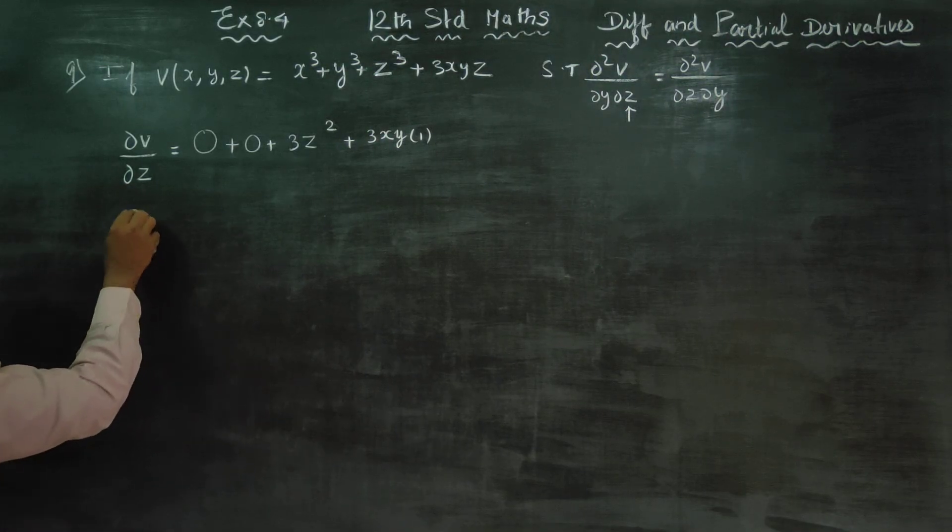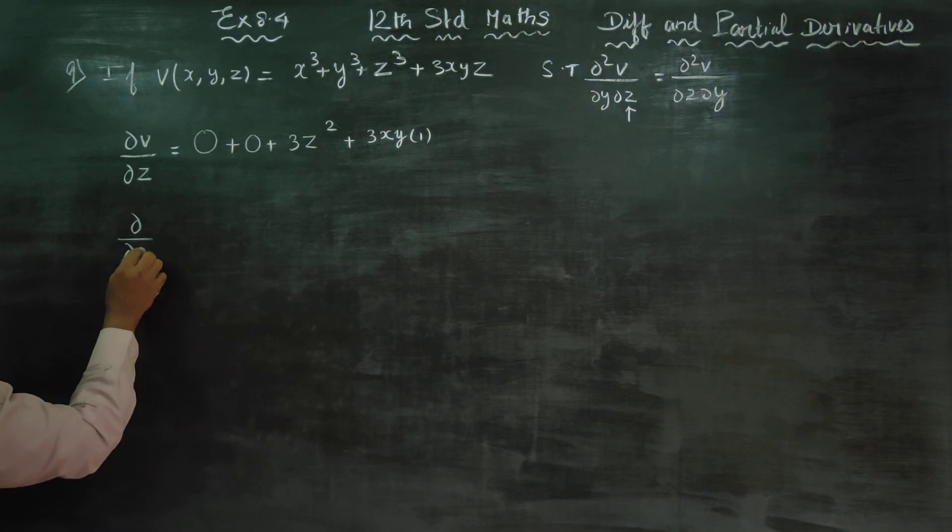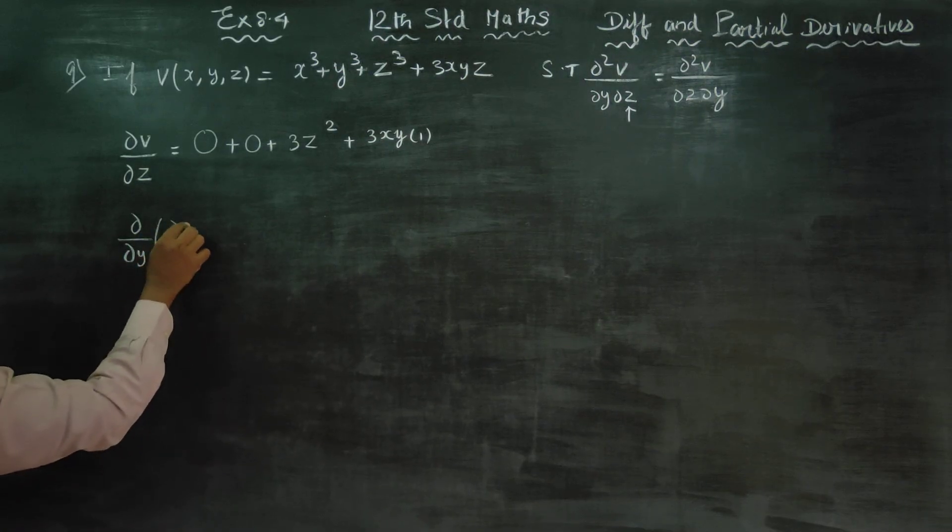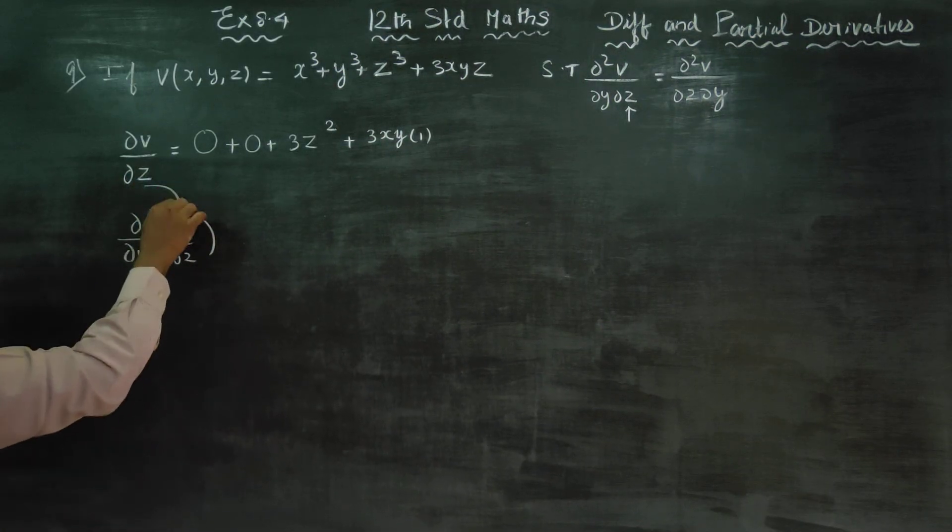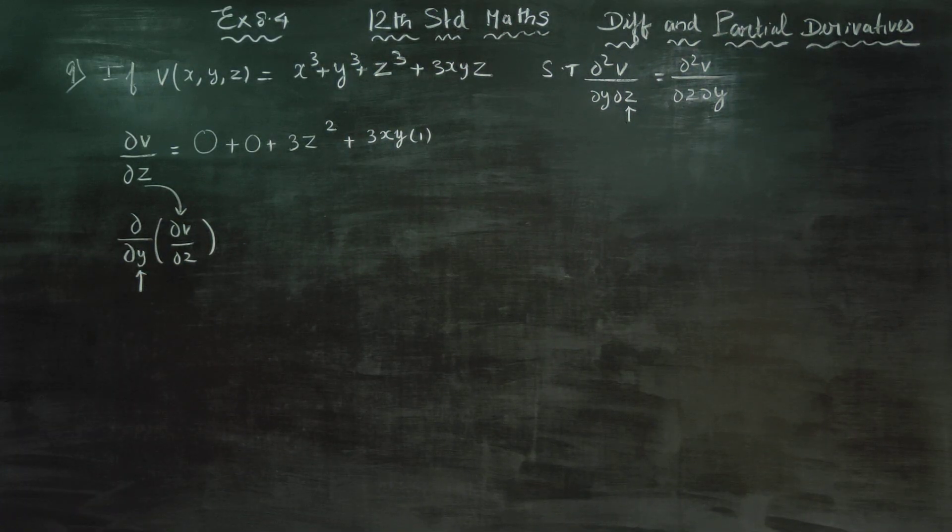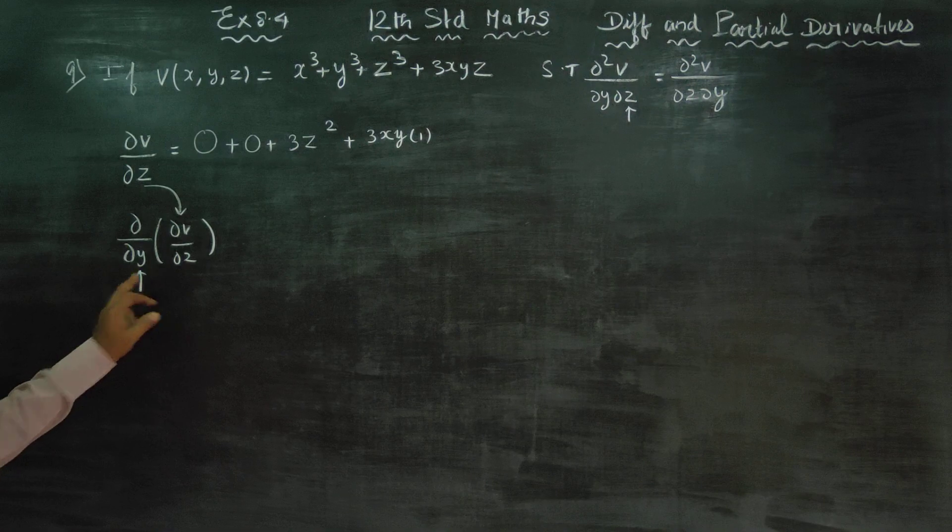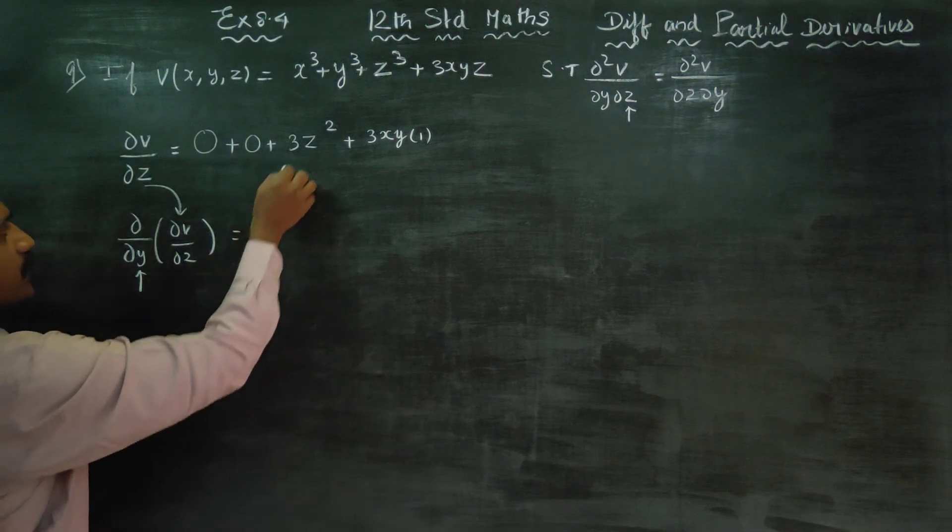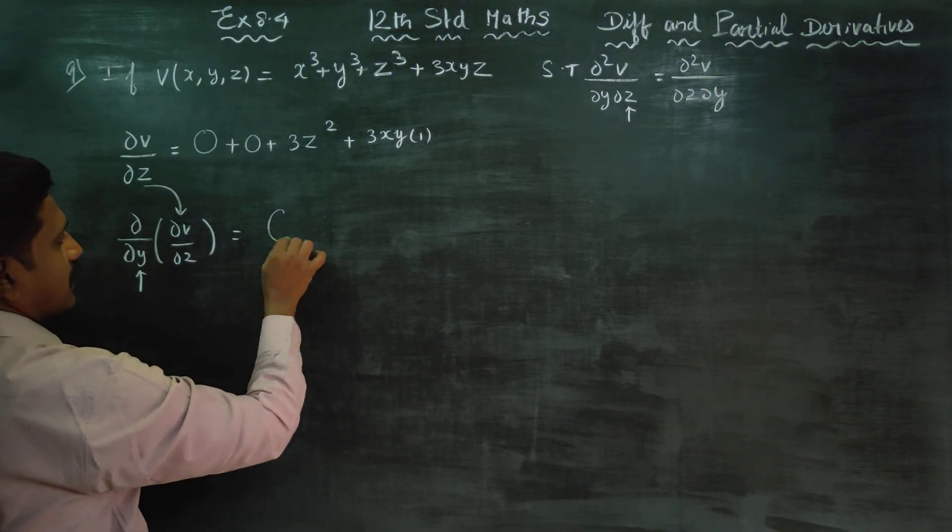After finishing this, again I am going to differentiate the same sum. That is, dv/dz sum, with respect to y, partial differentiation. For y there's importance. This becomes a constant.